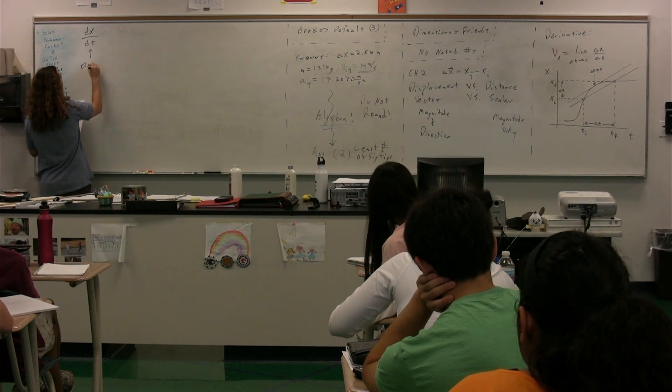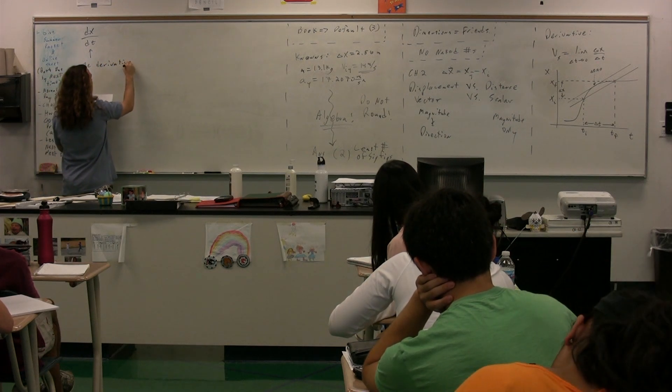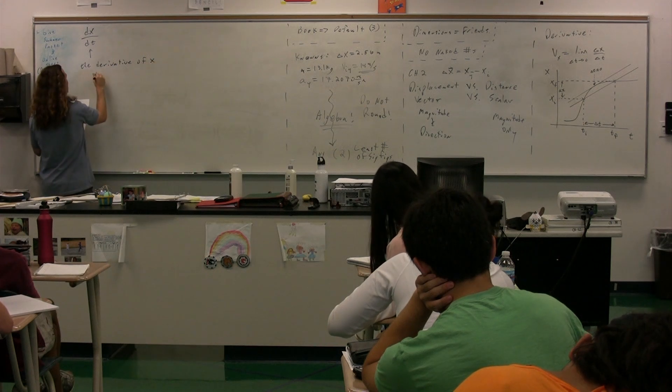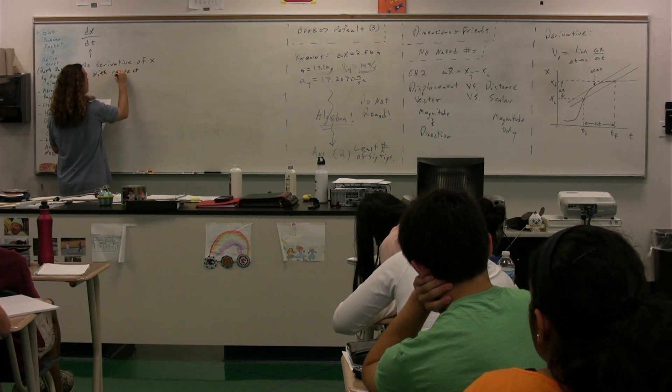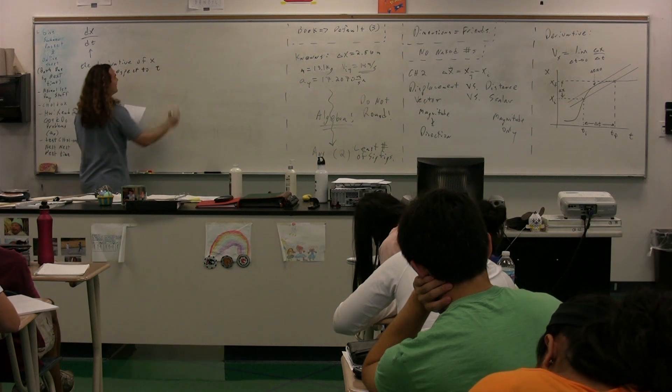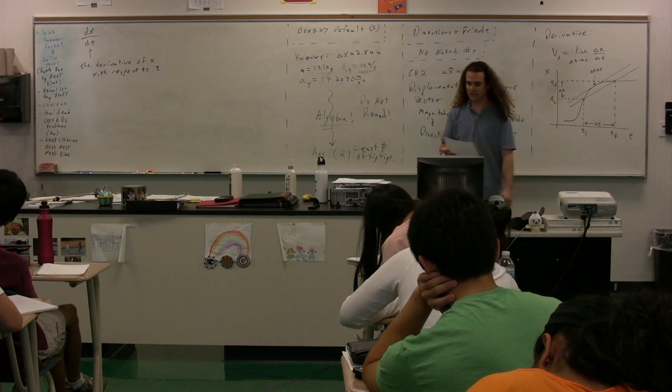the way we write that is dx dt. This means the derivative of x with respect to t. So, the derivative of position with respect to time, the derivative of x with respect to t.